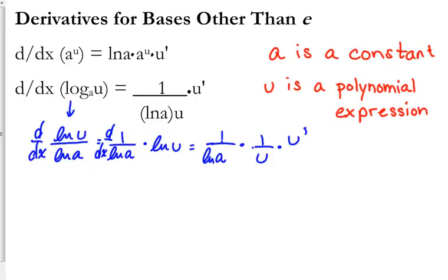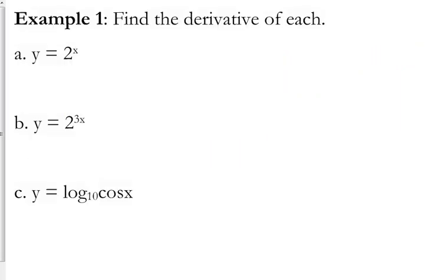When we took the derivative of that, it was — the natural log of a is just the constant scalar multiple in front — so 1 over the natural log of a, times the derivative of the natural log of u, which is 1 over u, times u prime.